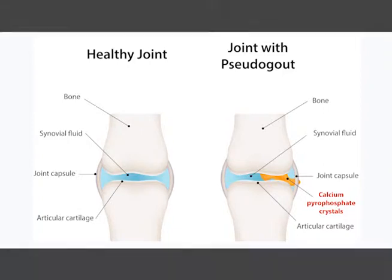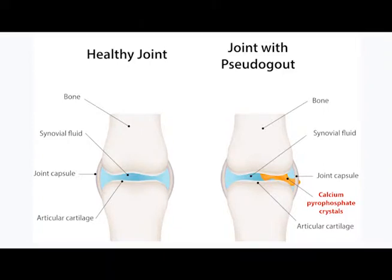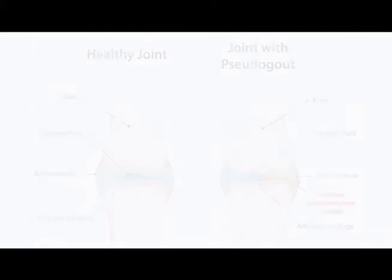In a much similar fashion, pseudogout involves something called calcium pyrophosphate. It's a similar crystal, but a different means of irritation as far as what's going on, and less concerning for actual renal issues than gout, but can cause very similar symptoms.